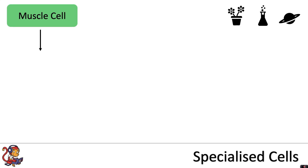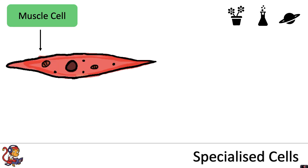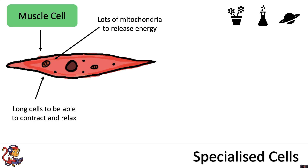More specialised animal cells include the muscle cell. This has lots of mitochondria to release energy, and it is also a very long cell to be able to contract and relax for movement.